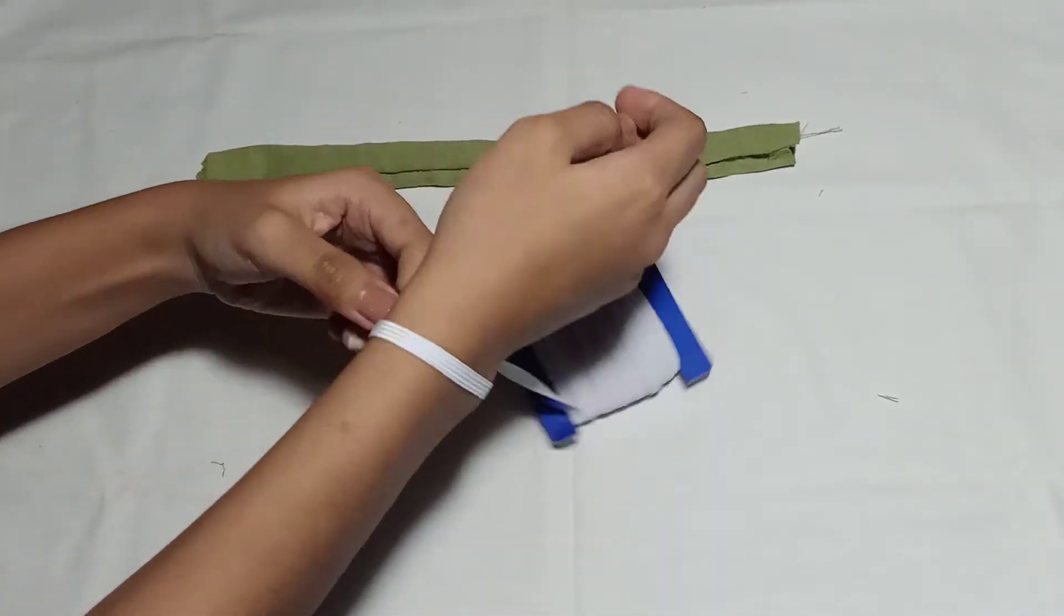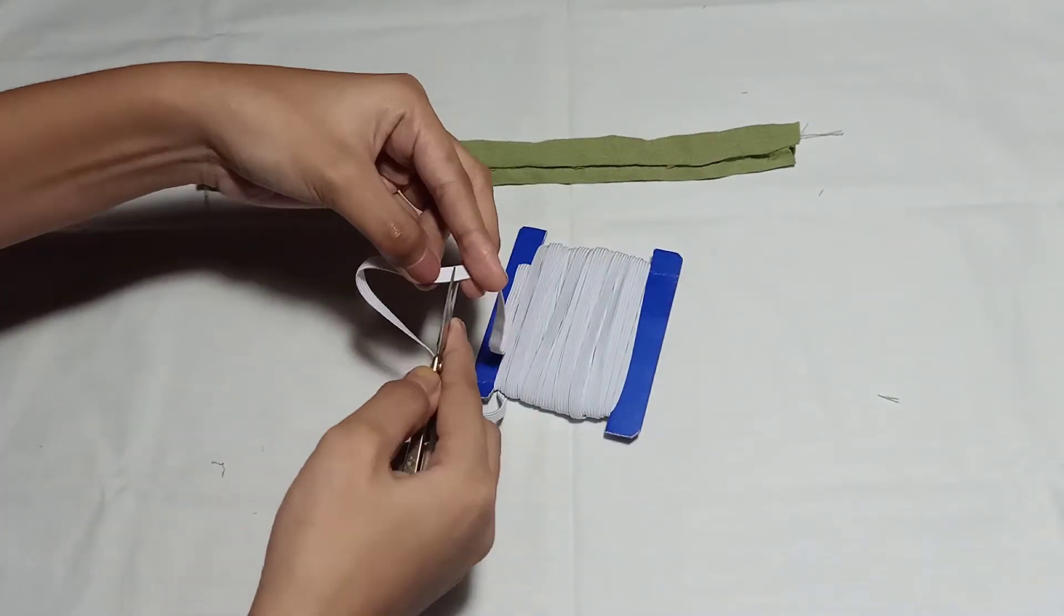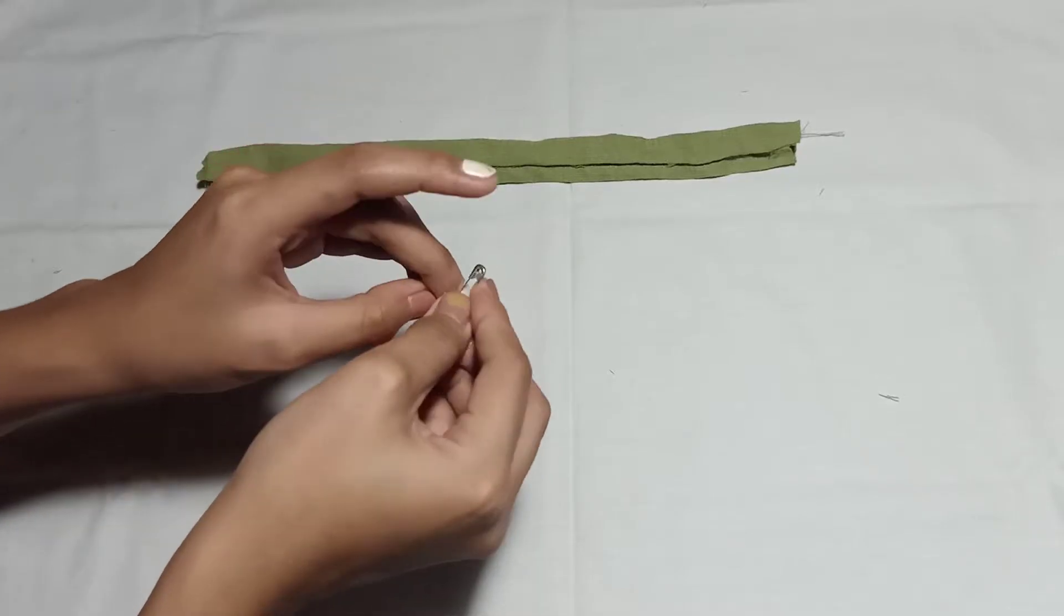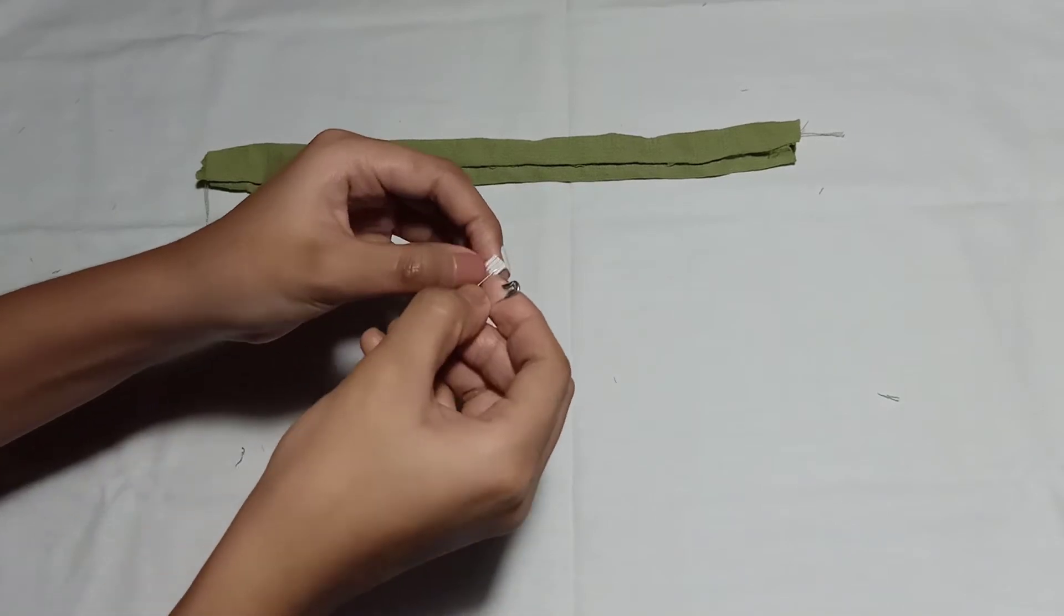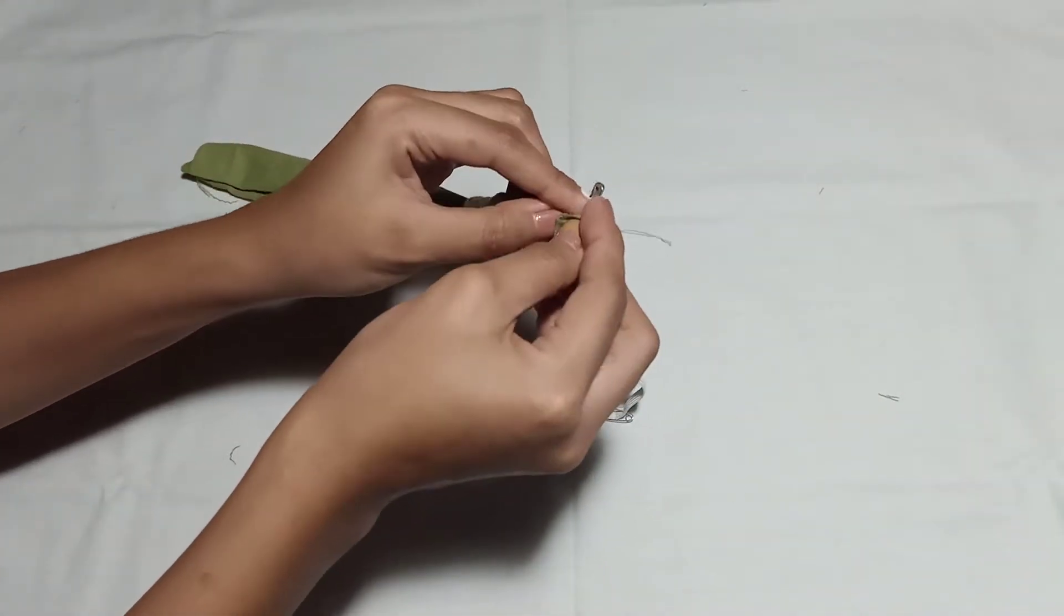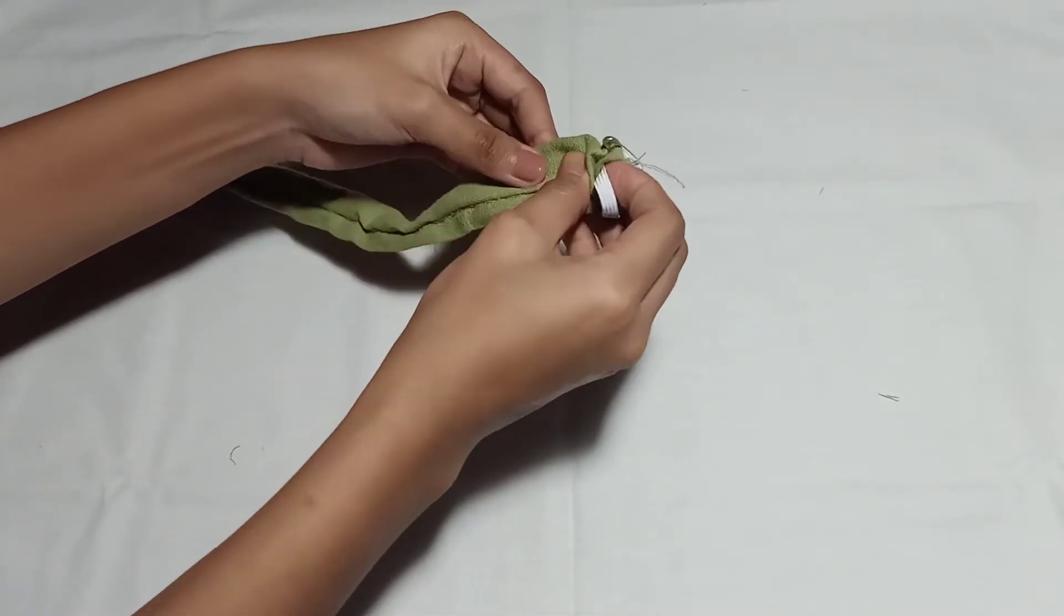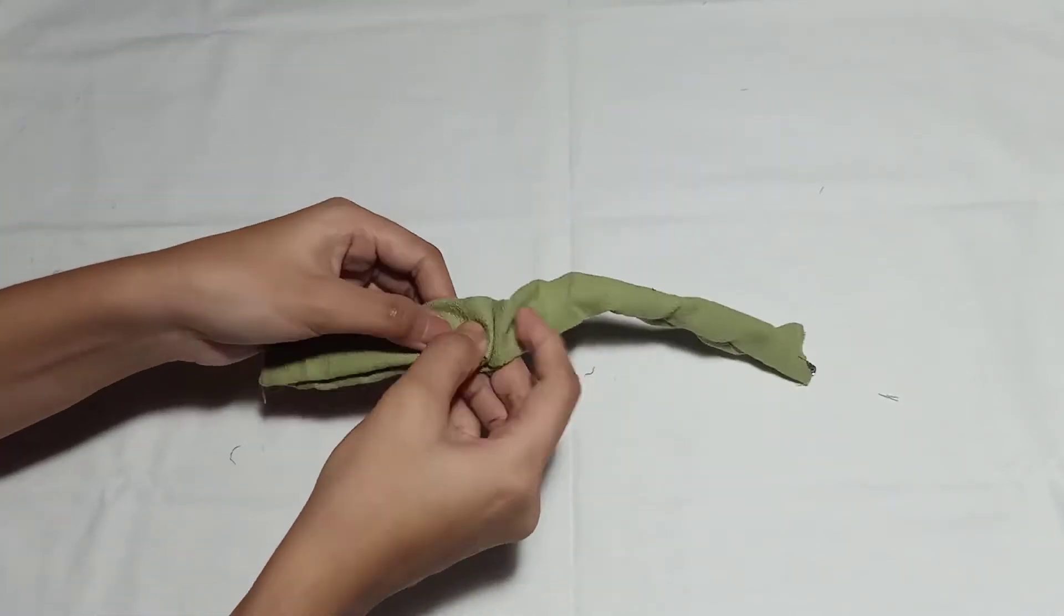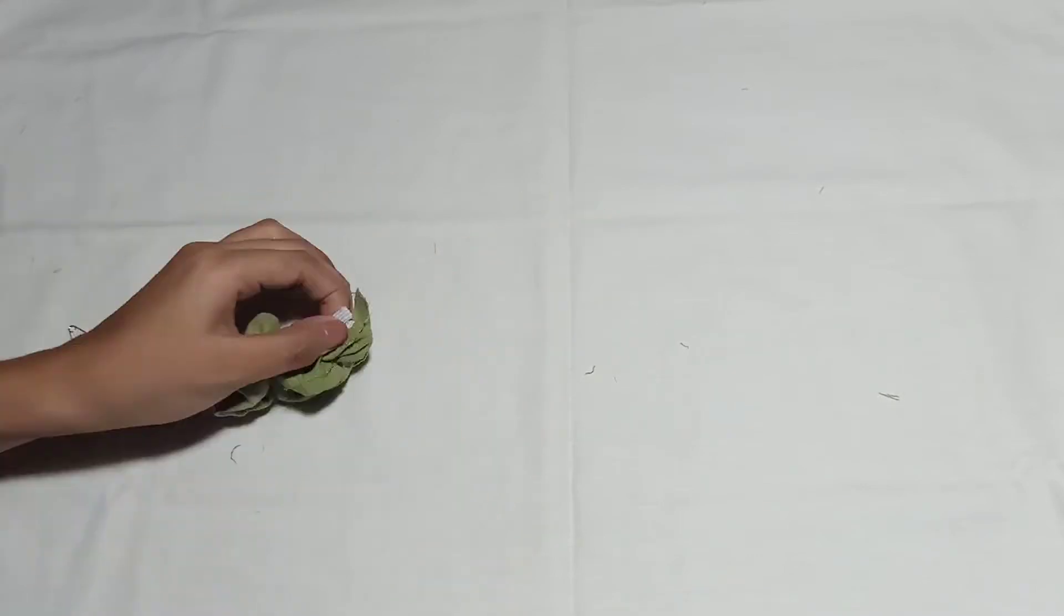After turning the fabric, I got elastic and measured it around my wrist circumference. Then I got safety pins and placed them on both ends of the elastic, with one end touching the fabric. I'm inserting the elastic, and once it comes out, I'll connect both ends.